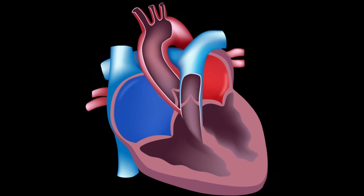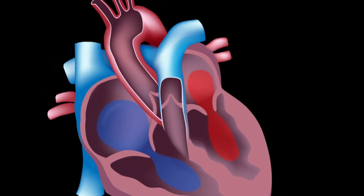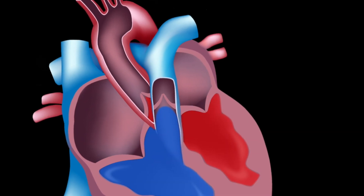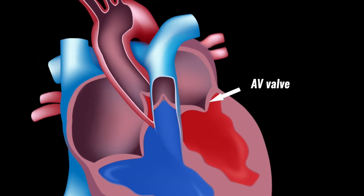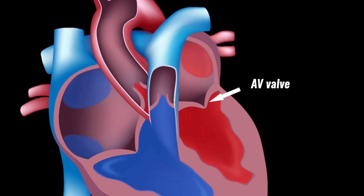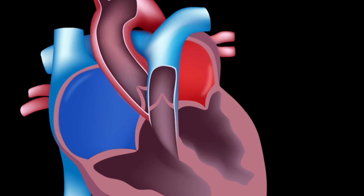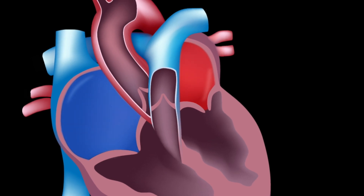Valves, known as atrioventricular or AV valves, separate the atria and ventricles. The purpose of these valves is to prevent blood from flowing in the wrong direction.